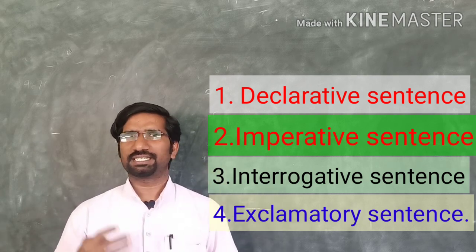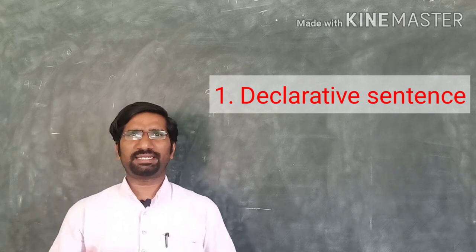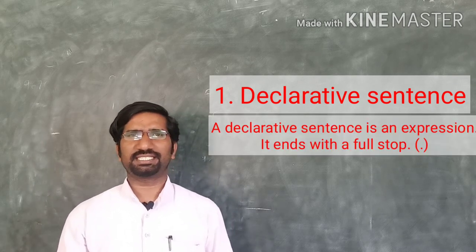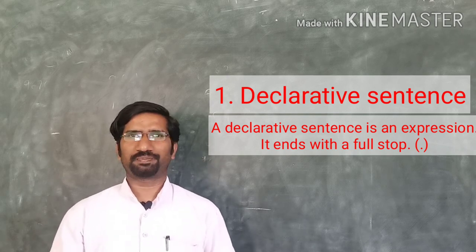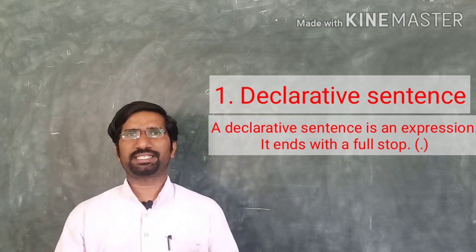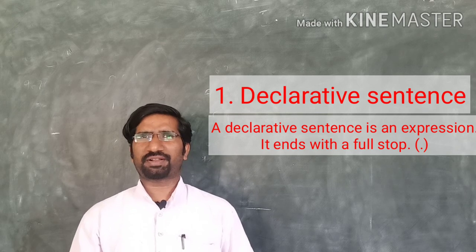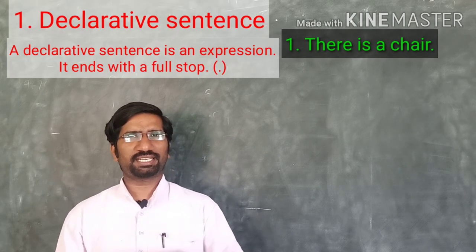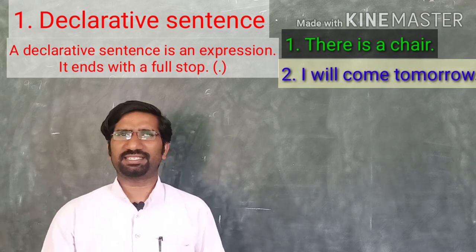What do you mean by a declarative sentence? A declarative sentence is an expression that ends with a full stop. This is also called an assertive sentence. For example: 'There is a child' — it is a declarative sentence. 'I will come tomorrow' — it is a declarative sentence. 'You are listening' — it is a declarative sentence.